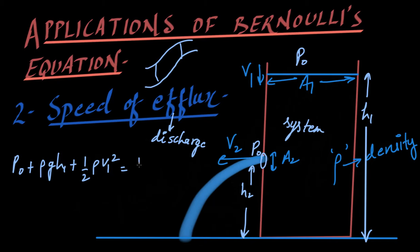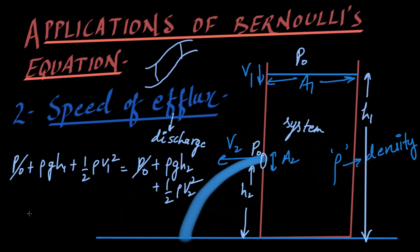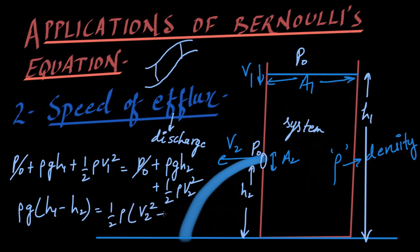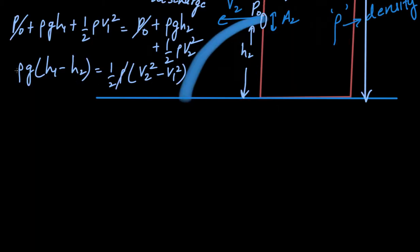At surface 2, the pressure is p0 again, so: p0 + rho g h2 + half rho v2 squared. This is Bernoulli's equation in this case. The p0 terms cancel out, giving: rho g (h1 - h2) = half rho (v2 squared - v1 squared). The rho terms also cancel, and since the fluid is incompressible I can use the continuity equation: a1 v1 = a2 v2.